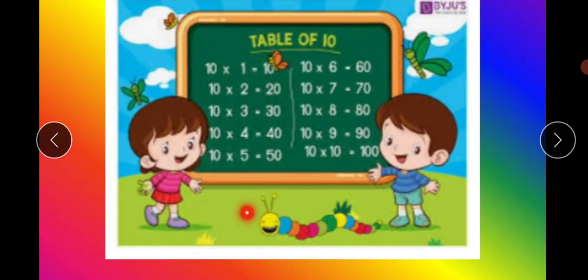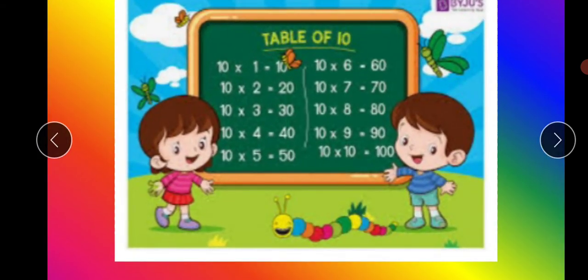The next one is table of 10. 10 ones are 10. 10 twos are 20. 10 threes are 30. 10 fours are 40. 10 fives are 50.